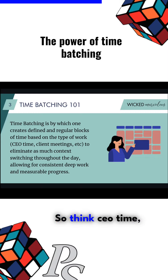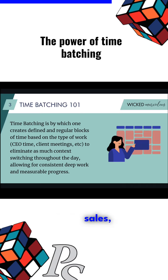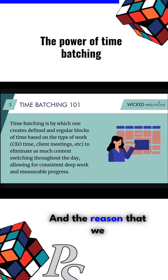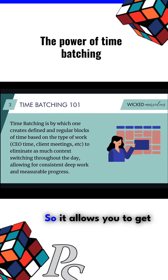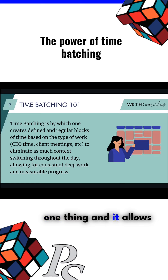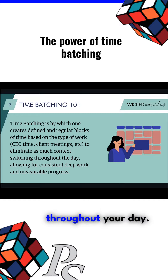Think CEO time, client meetings, sales, product development — things like that. The reason we use time batching versus time blocking in a lot of cases is that it eliminates context switching throughout your day. It allows you to get deep and be focused on one thing, and it allows for more measurable progress faster than jumping back and forth between things throughout your day.